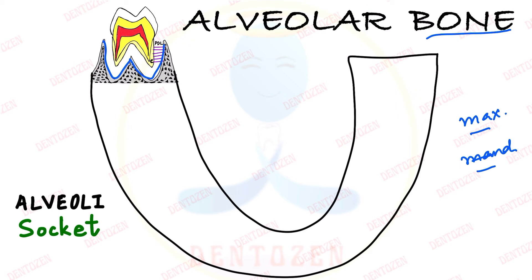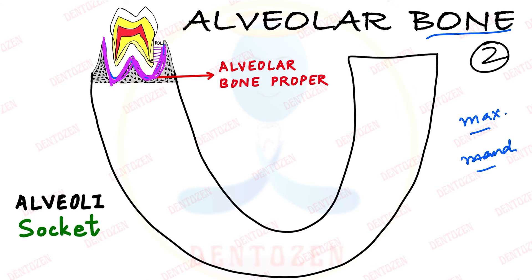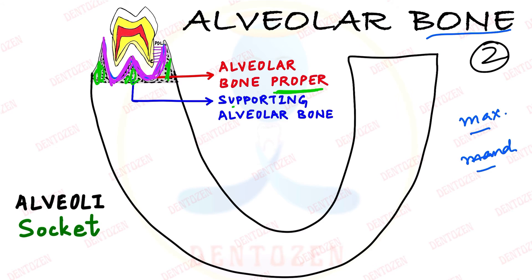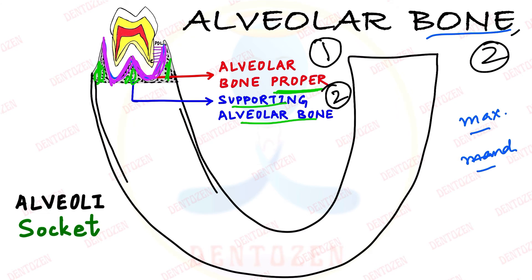Alveolar bone has two parts. The first part is the one which immediately surrounds the roots of the teeth — that is called alveolar bone proper. The second part which surrounds this alveolar bone proper and supports it is known as supporting alveolar bone. Supporting alveolar bone becomes continuous with the bones of the jaws, that is maxilla and mandible.